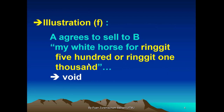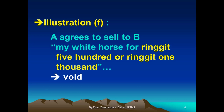As for this example, the agreement is void because there are two prices being stated in the agreement. There is uncertainty in terms of the price of the subject matter of the contract. The agreement is void due to uncertainty.